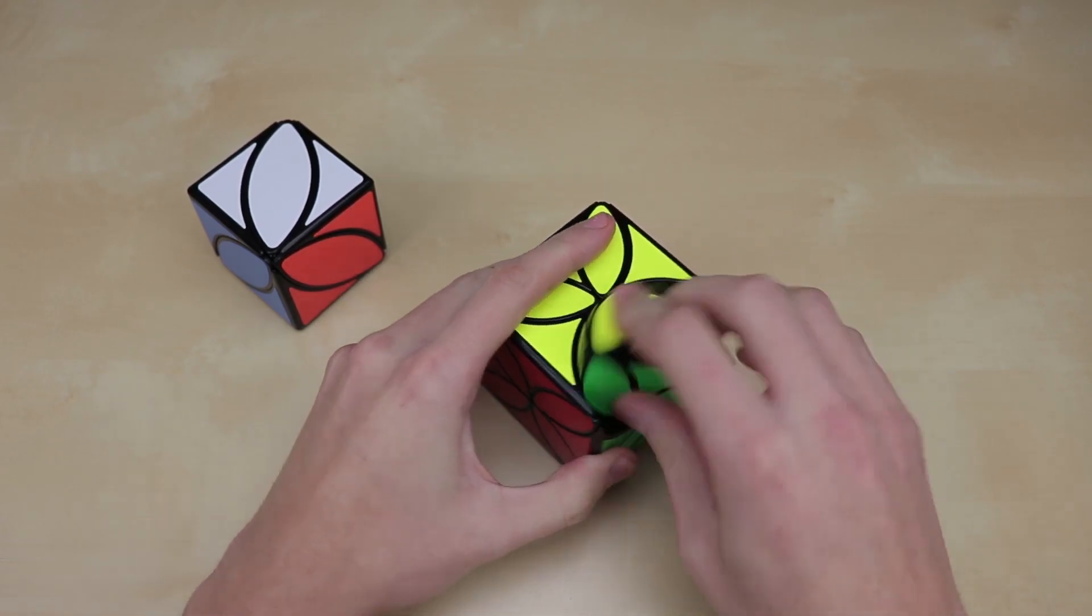But while we're still looking at this puzzle, I believe it can also jumble. Yeah, there we go. And so you don't really expect that when you see a puzzle like this. But just like the Curvy Copter, it can do the exact same thing. It can jumble.